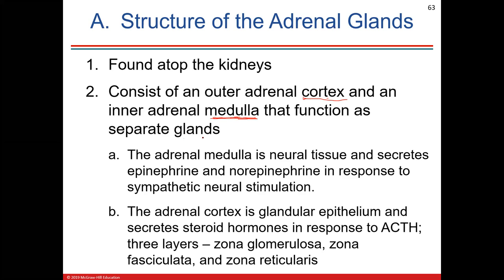The cortex and medulla are essentially separate glands within one gland. The adrenal cortex is derived from mesothelium — muscle and epithelial tissue — while the medulla is ectoderm embryologically, the same origin as the nervous system. So the adrenal medulla has a neuroendocrine connection. The neurotransmitter and hormone from the medulla is epinephrine or norepinephrine, also known as adrenaline and noradrenaline.